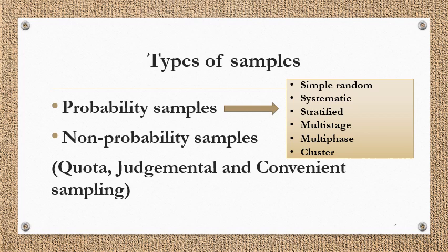Coming to types of samples, broadly they can be divided into probability samples and non-probability samples. Probability samples are based on probability, that is, they are based on randomization. Every person will have an equal chance of getting selected as a sample, so all the sampling techniques we will study will have randomization at one or another step.